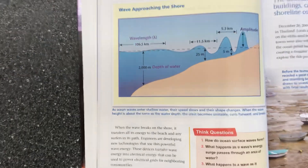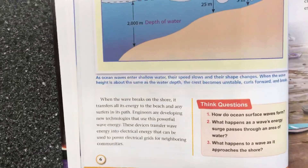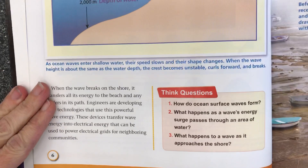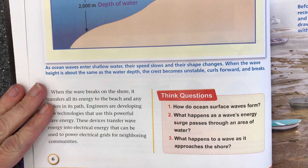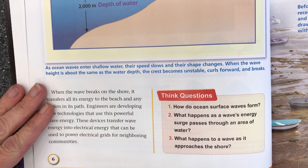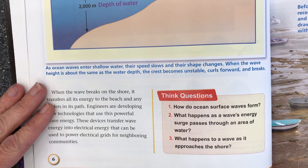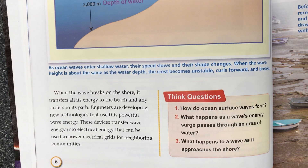I'm going to lower and zoom in on the think questions so that you can pause here if you'd like to write them down. Question number one: how do ocean surface waves form? Question number two: what happens as a wave's energy surge passes through an area of water? Question number three: what happens to a wave as it approaches the shore? Thanks, Bruins! See you tomorrow!